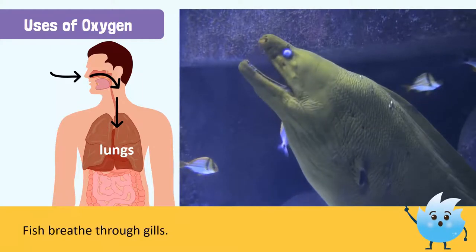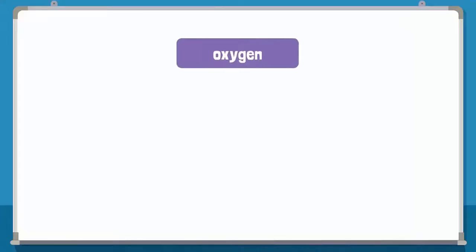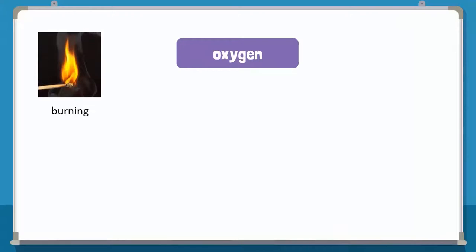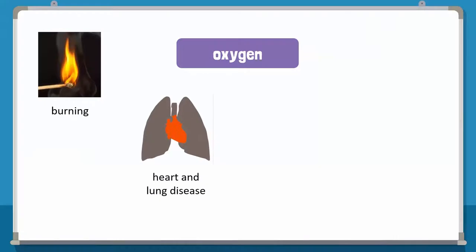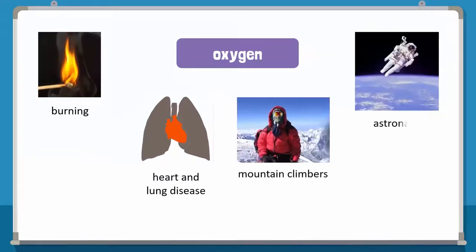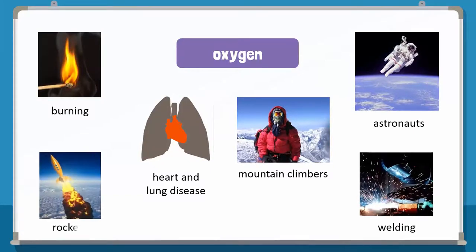There are other uses of oxygen as well. For example, oxygen is needed for burning. In hospitals, oxygen tanks are used to help patients breathe. Mountain climbers and astronauts also rely on oxygen tanks where natural oxygen levels are low. It is also used in welding and to burn fuel in rockets.